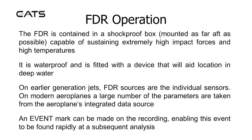The FDR is contained in a shock-proof box, mounted as far aft as possible, capable of sustaining extremely high impact forces and high temperatures. It is waterproof and is fitted with a device that will aid location in deep water. On earlier generation jets, FDR sources are the individual sensors themselves. On modern aeroplanes, a large number of the parameters are taken from the aeroplane's integrated data source. An event mark can be made on the recording, enabling an event to be found rapidly at subsequent analysis.